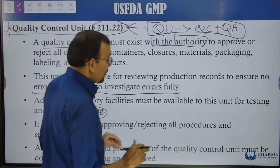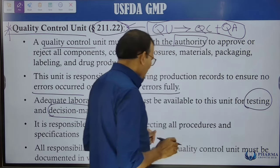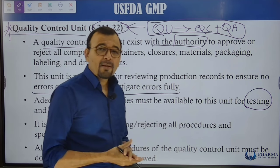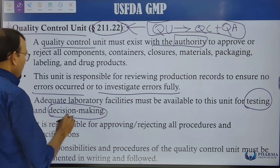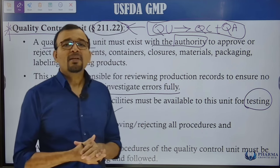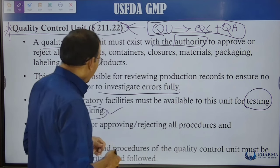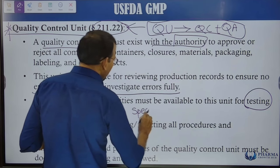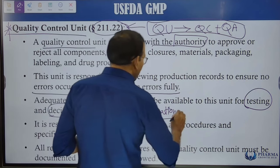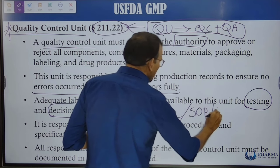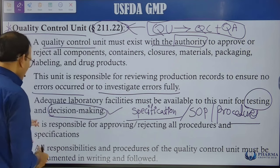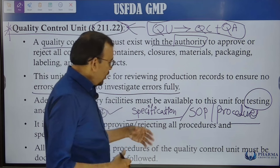Adequate facility for testing includes the instruments, equipment, environmental conditions, and number of personnel required. There must also be a facility available to make decisions on samples under testing — whether a sample is rejected or accepted against the specification. Specifications must be available, along with SOPs and test procedures to conduct the testing.